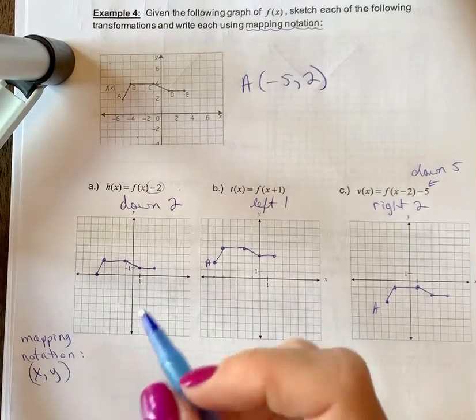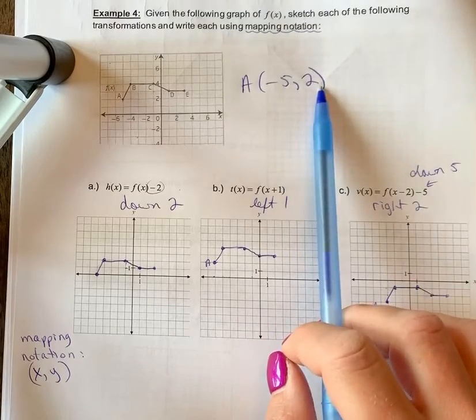What we're going to do is find out what happened to the coordinates negative 5 and 2, for example.